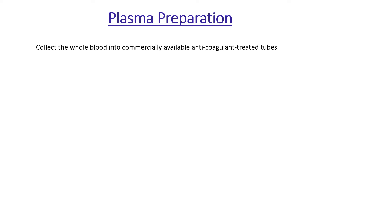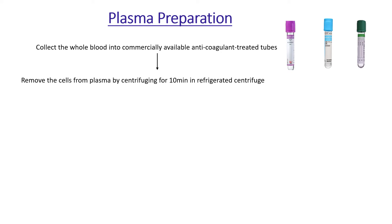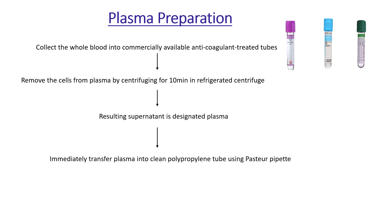For plasma preparation, collect whole blood into commercially available anticoagulant-treated tubes. There are three types: a lavender top tube treated with EDTA, a blue top tube treated with citrate, and a green top tube treated with heparin. The heparin tube is mostly avoided as it causes some contamination in the blood. Centrifuge for 10 minutes in a refrigerated centrifuge; the resultant supernatant is the plasma, transferred into a clean polypropylene tube and maintained at 2°C.